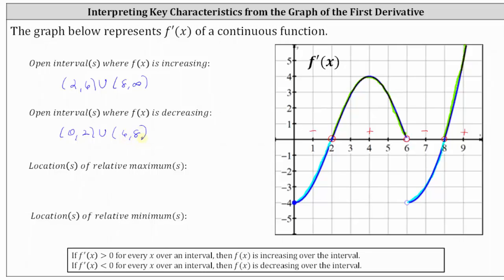Next, we're asked to determine the location of any relative maximums as well as relative minimums. f of x has a relative maximum when there's a high point on the graph of f of x, which is where f of x changes from increasing to decreasing, or where the derivative changes from positive to negative. And f of x has a relative minimum when the graph of f of x has a low point, which occurs where the function changes from decreasing to increasing, or where the derivative changes from negative to positive.